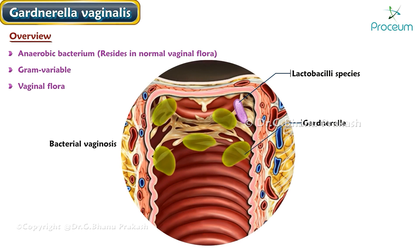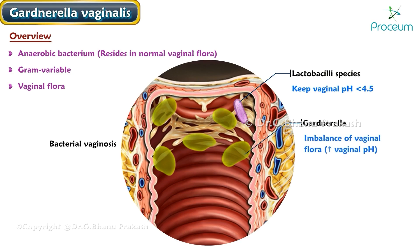Normally, the vaginal flora is made up mostly of lactobacilli, which keep vaginal pH below 4.5. When the number of lactobacilli decreases, that results in an imbalance of vaginal flora, which increases the vaginal pH.